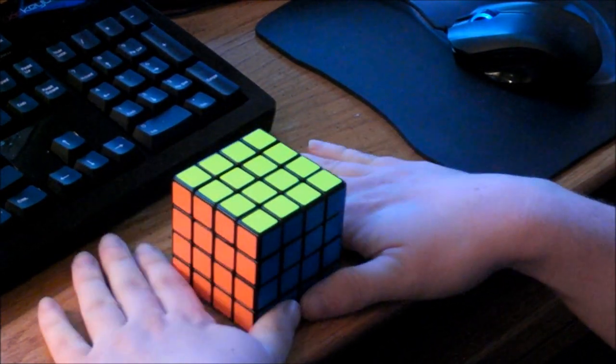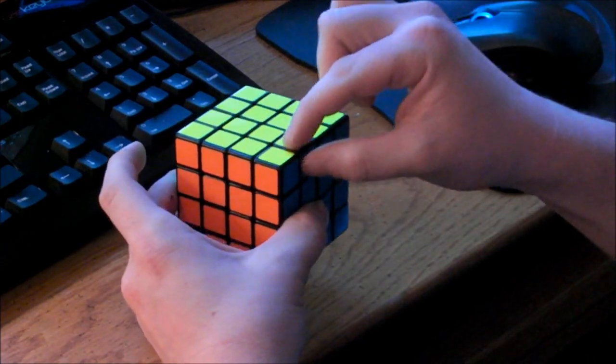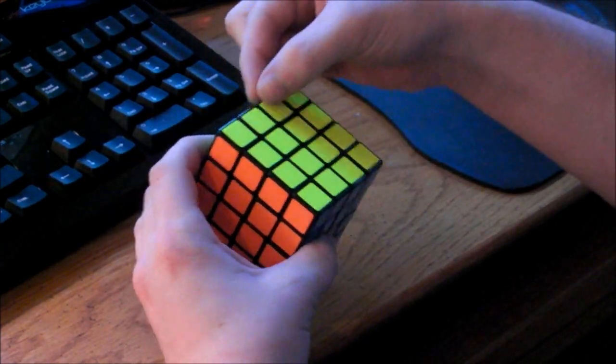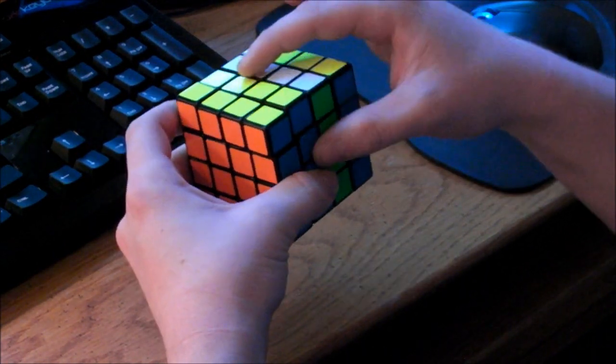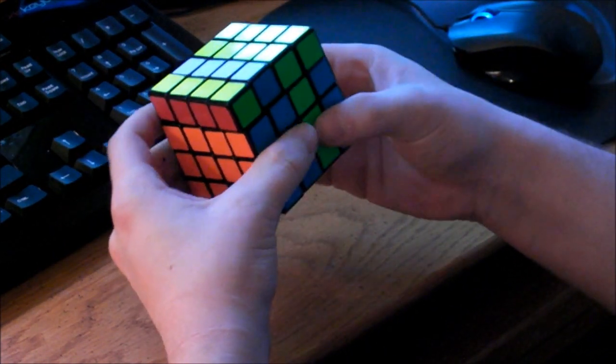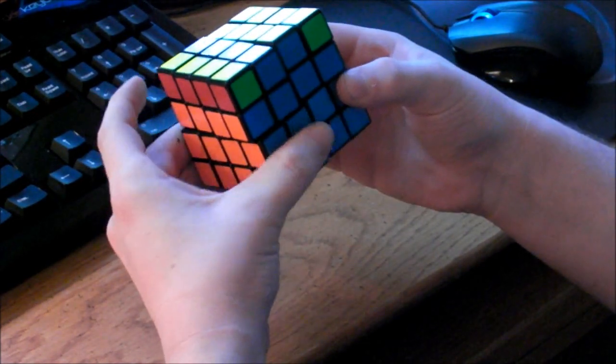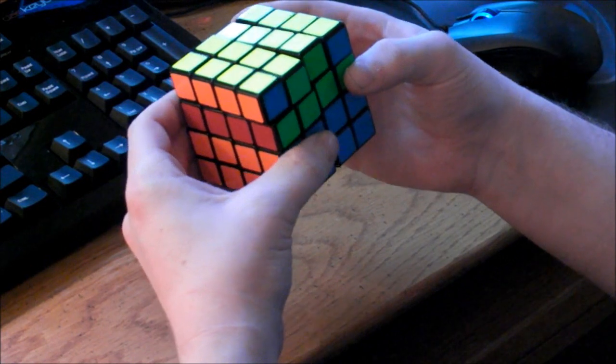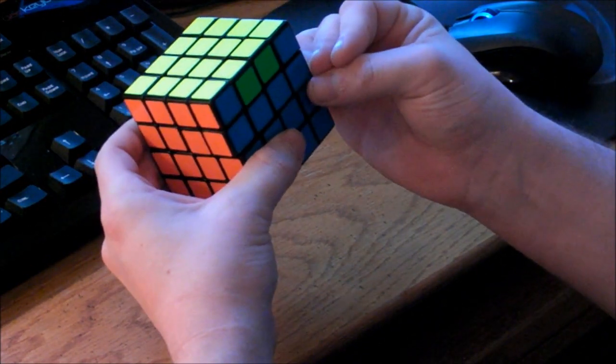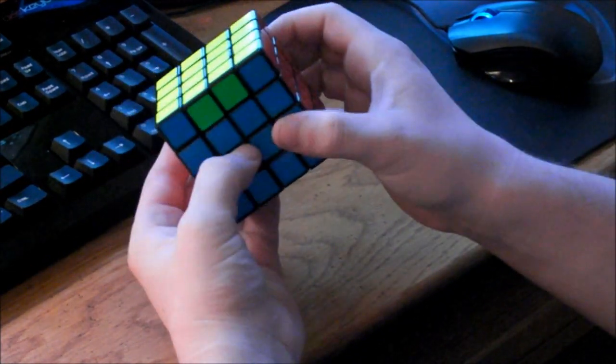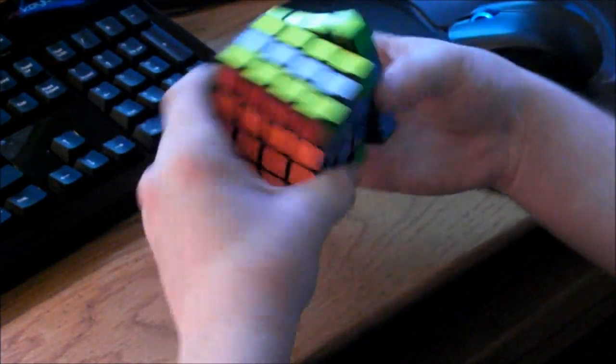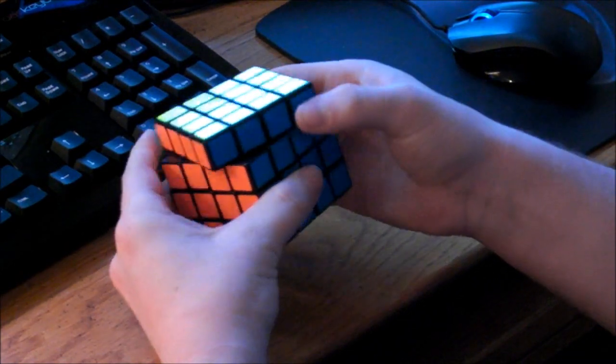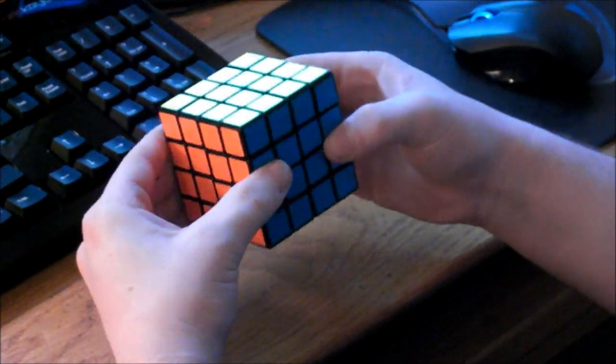And the last thing I'm going to show you is PLL parity, where you switch this edge pair and this edge pair. R2, lowercase R2, U2, lowercase R2, UW2, lowercase R2, U2, UW2. And that can be performed very quickly and it switches the back pair and the front pair. And there is PLL parity.